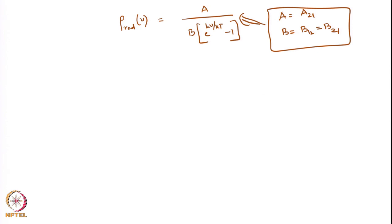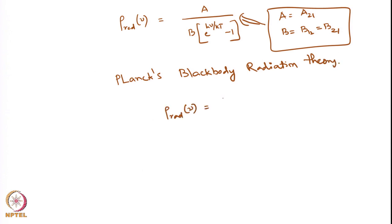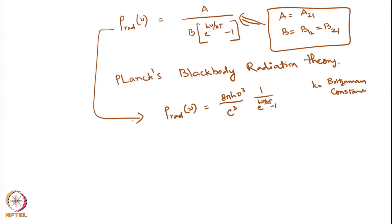According to Planck's blackbody radiation theory, rho(nu) is given by 8π h ν³ / c³ multiplied by 1 / (exp(h-nu/kT) − 1). Since both expressions give rho(nu), we can equate them, and it turns out that A/B = 8π h ν³ / c³.